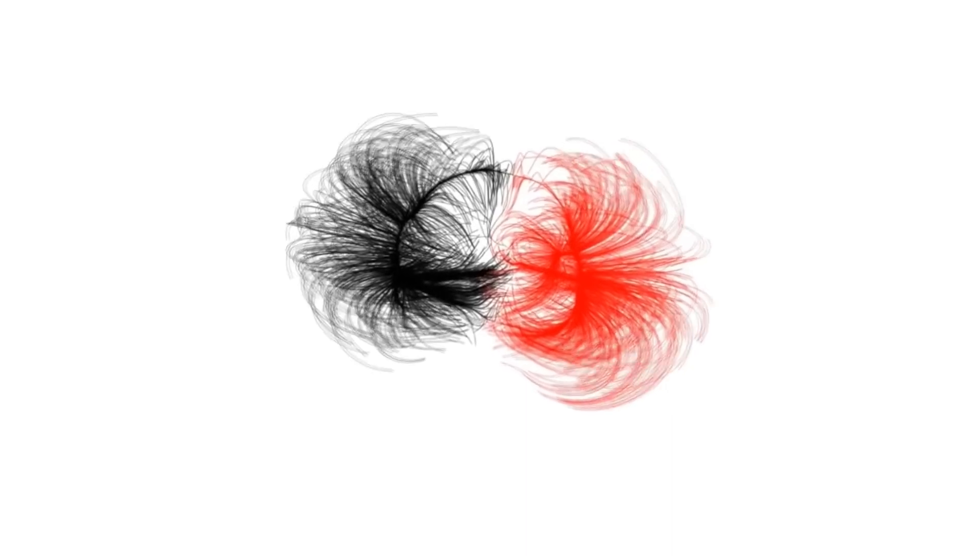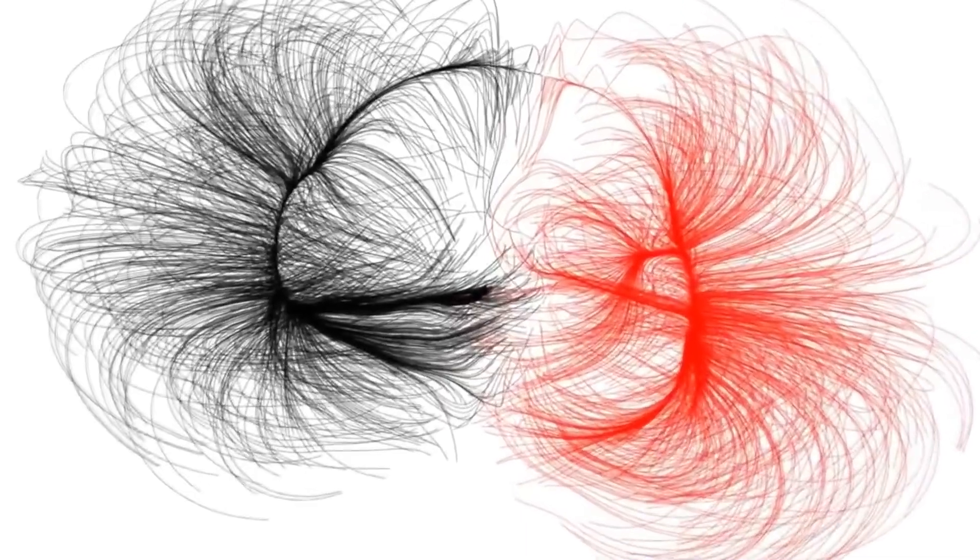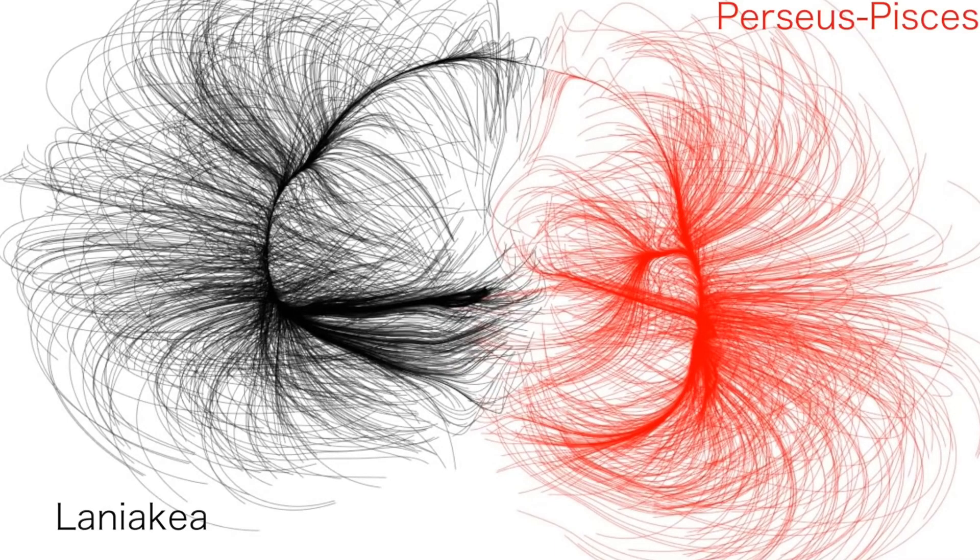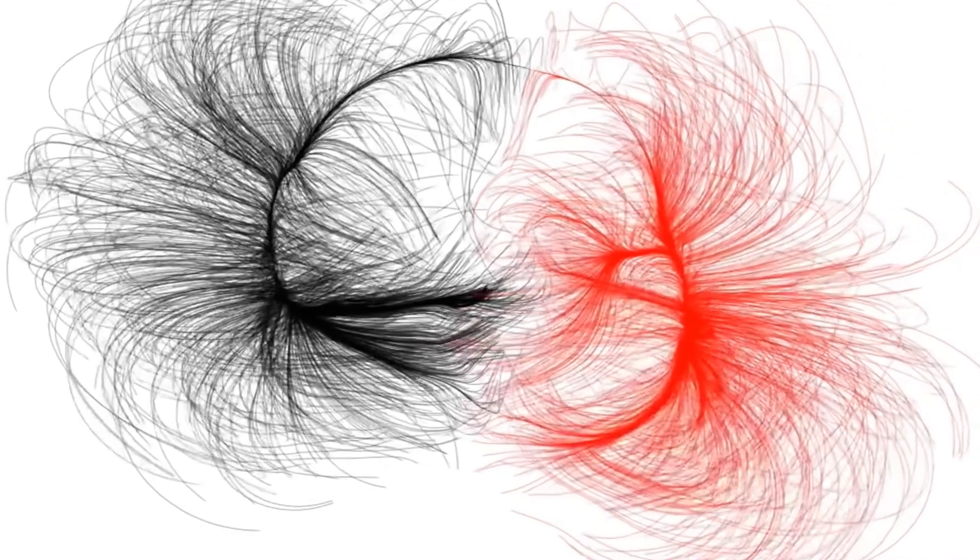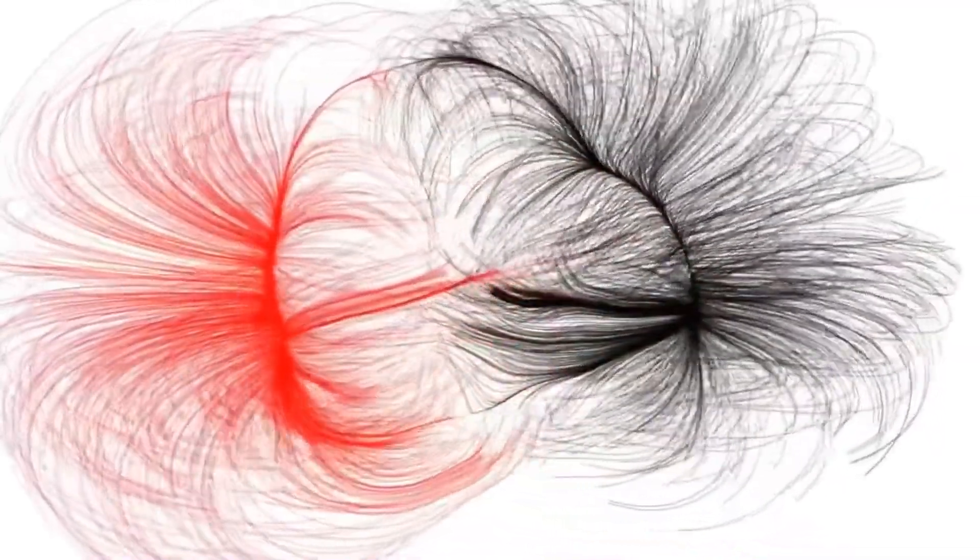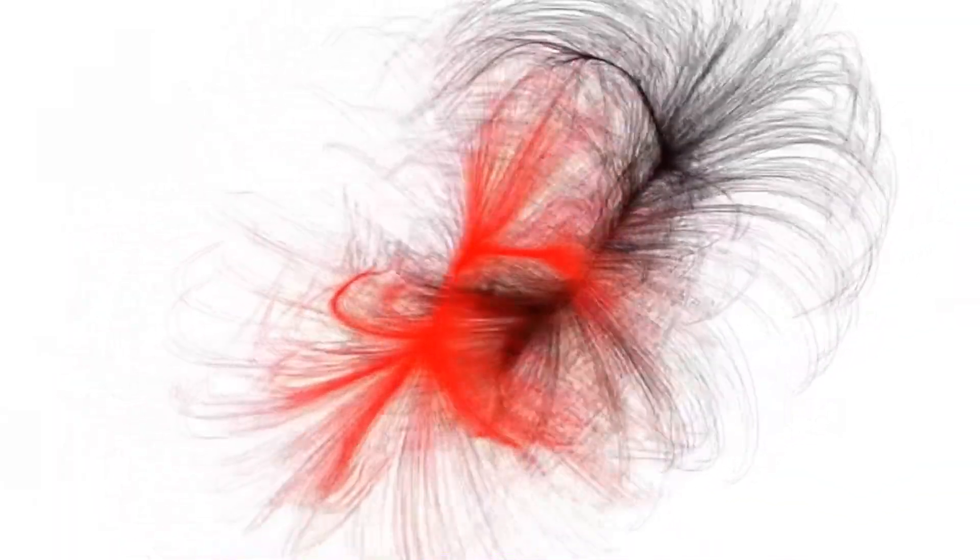The Great Attractor's existence has significant implications for our understanding of the universe. For one thing, its gravitational pull is so strong that it's affecting the motion of the Milky Way and other nearby galaxies. This means that the Great Attractor is playing a significant role in shaping the structure of the universe as we know it.